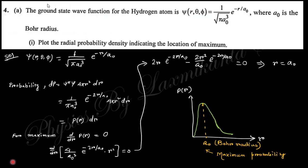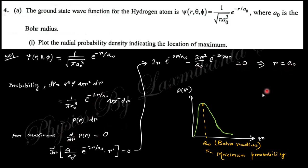The ground state wave function of hydrogen is given. Plot the radial probability distribution. Taking the probability as |ψ|²·4πr²dr, the expression is obtained, and the probability is maximum at r = a₀ (Bohr radius). The plot takes this characteristic shape.